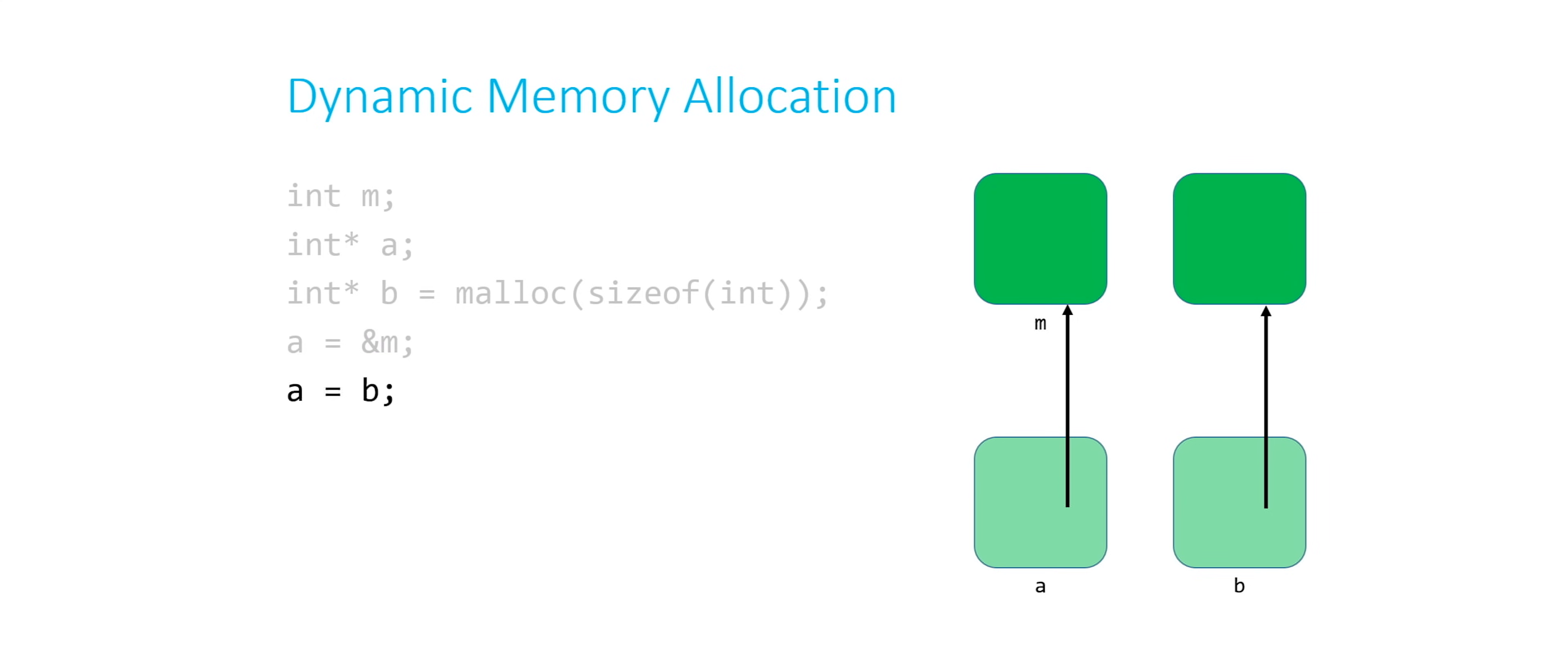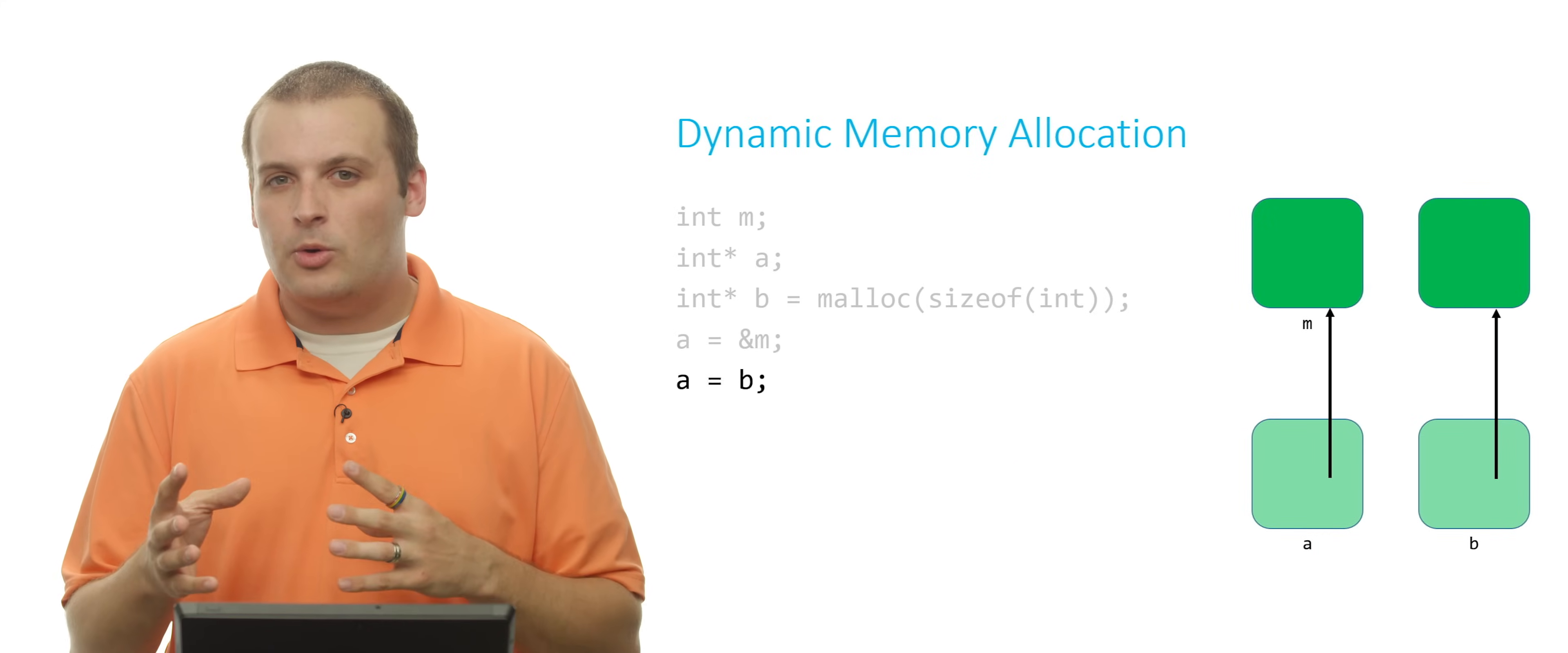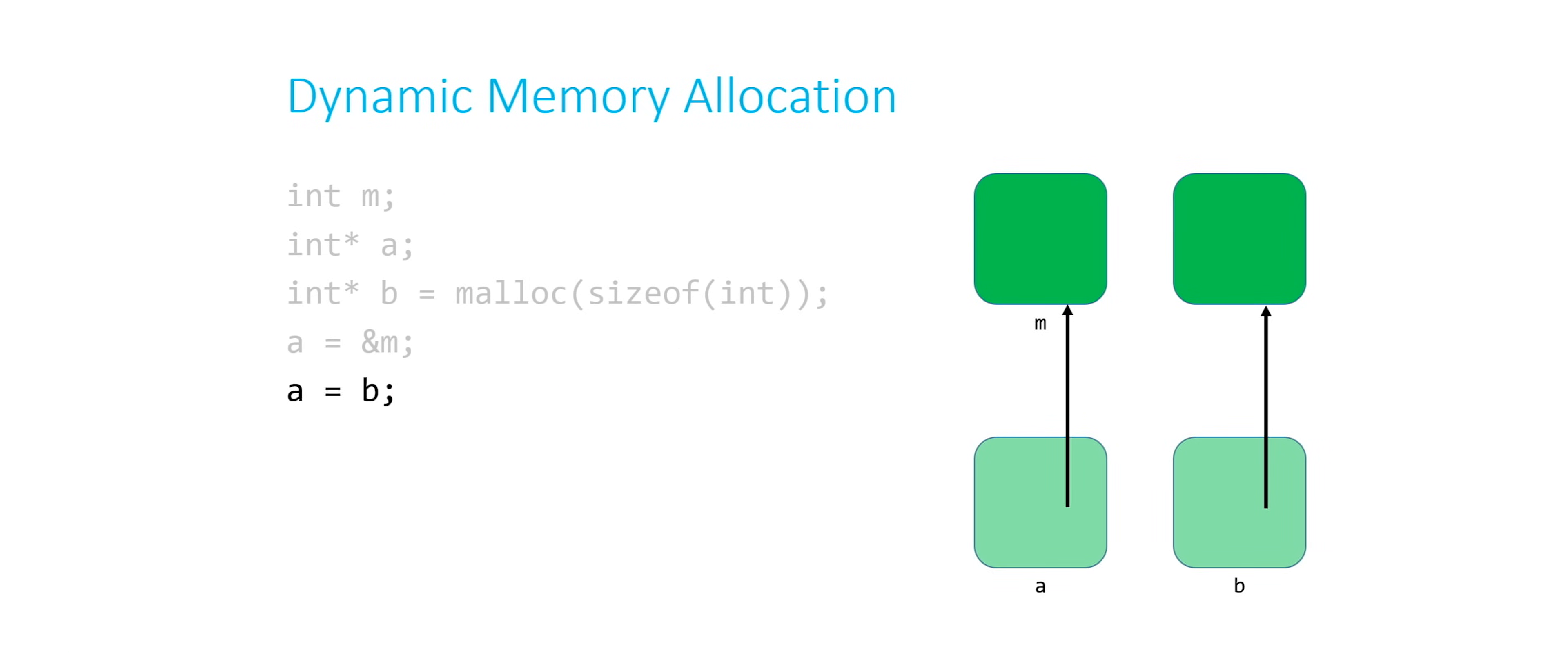Before I show you what's going to happen here, can you try and guess a little bit about what it's going to be? Take a look at the diagram. Think about how relationships might change. If I say a equals b, what am I saying?